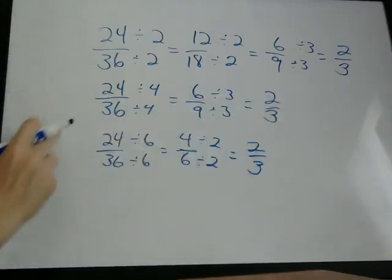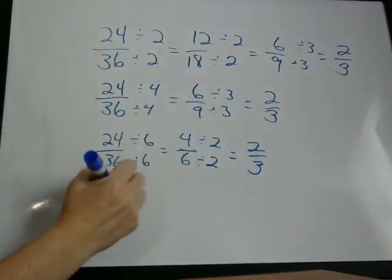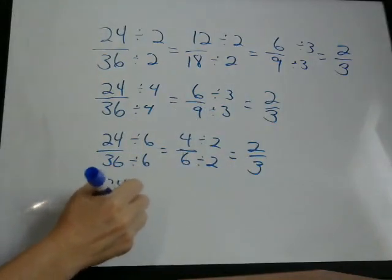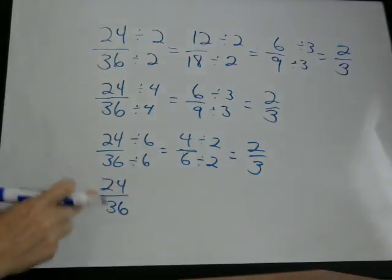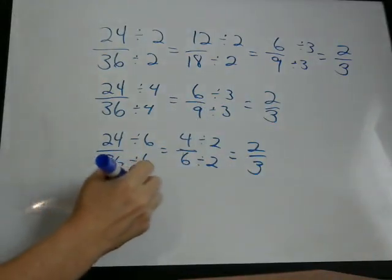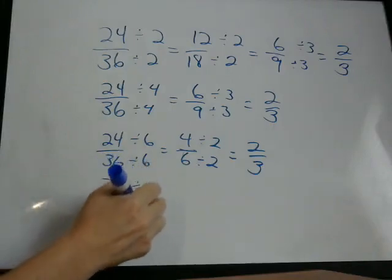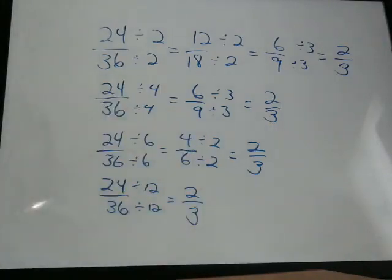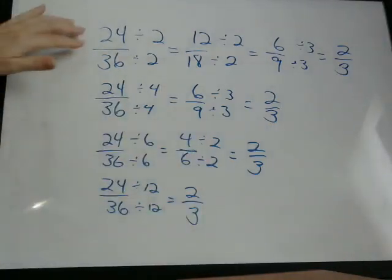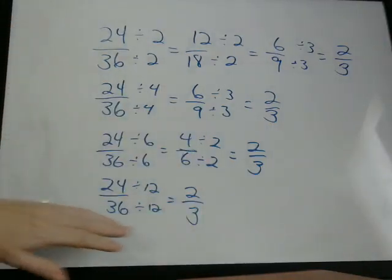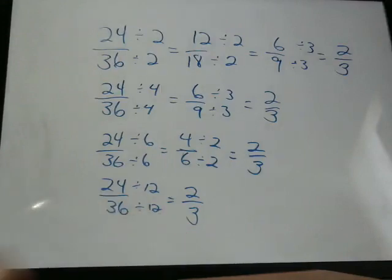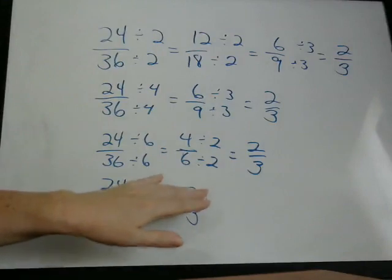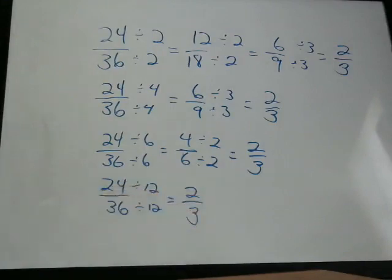The most direct route would be to recognize that, oh, both of these can be divided by 12. And we would have gotten our answer in one step. But again, it doesn't really matter how you get there as long as you get to the final answer where you are in lowest terms, where your numerator and denominator cannot both be divided by the same number evenly.